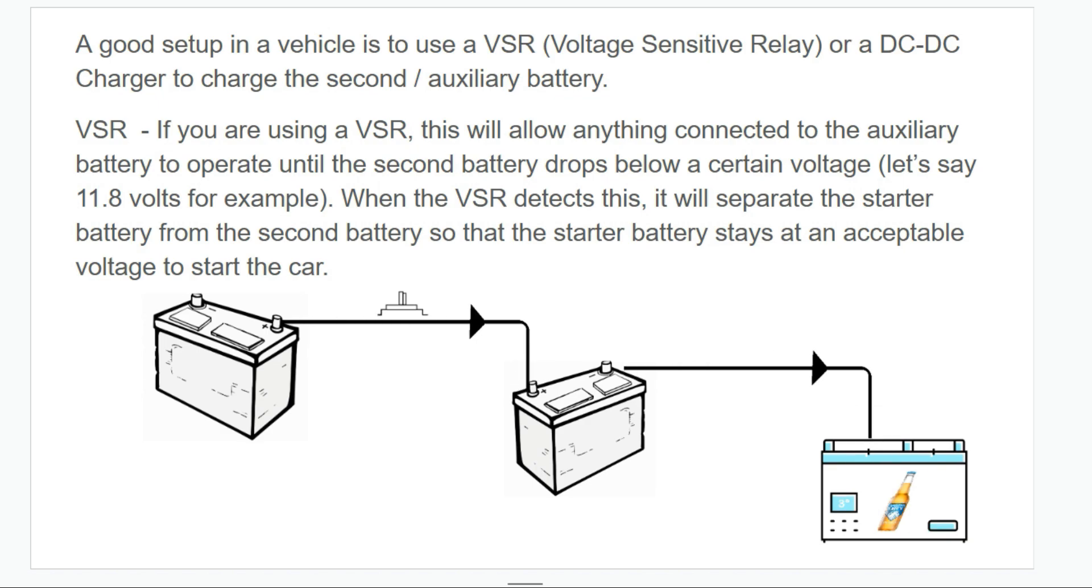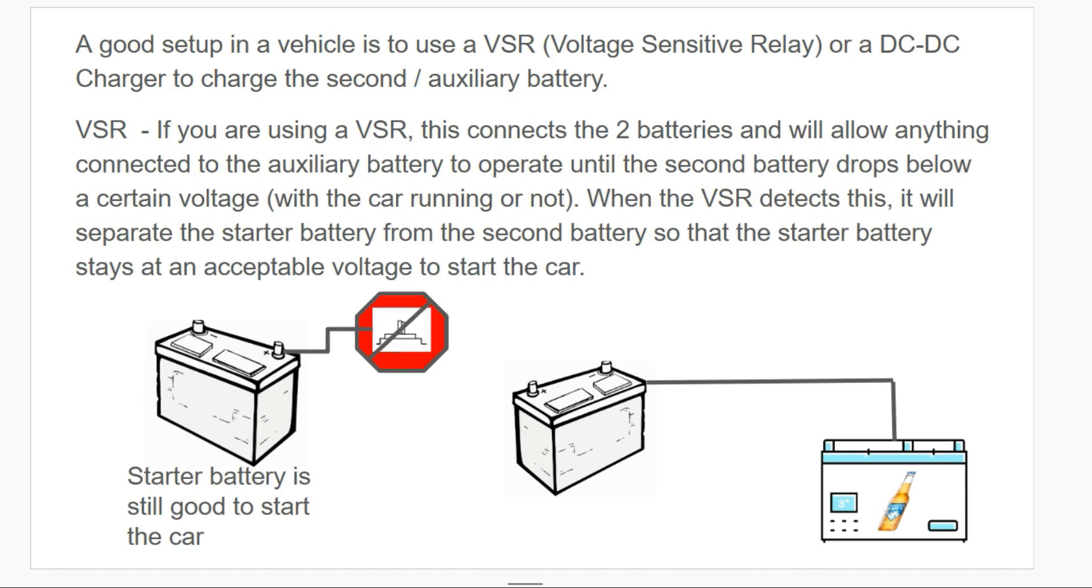A good setup in a vehicle is to use a voltage sensitive relay or a DC to DC charger to charge the second battery. With the voltage sensitive relay, if you're using one of these, it will allow anything connected to the auxiliary battery to operate until the second battery drops below a certain voltage, let's say 11.8 volts or whatever. When the voltage sensitive relay detects this, it will separate the starter battery from the second battery. This is so that the starter battery always stays at an acceptable level to start the car.